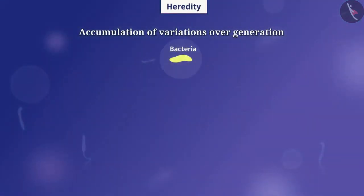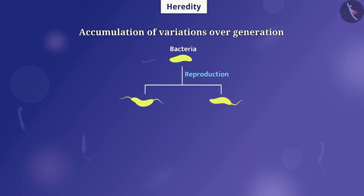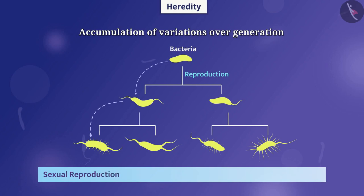For example, consider a bacterium which produces two individuals during reproduction. We can see traits inherited from a parent to its next generation. In addition to this, we also see some variations. Each individual in turn produces two more individuals similar in characteristics to that of the parent, but also having individual differences. In the same way, there is inheritance of traits and variations from generation to generation. Sexual reproduction produces more variations than asexual reproduction.